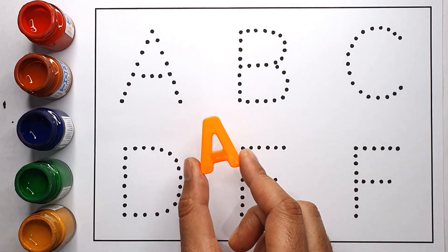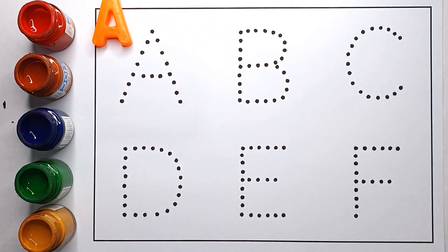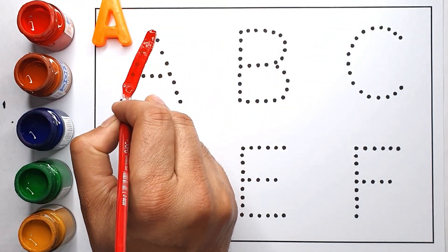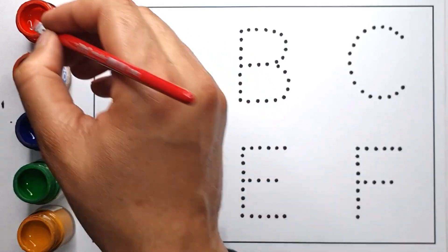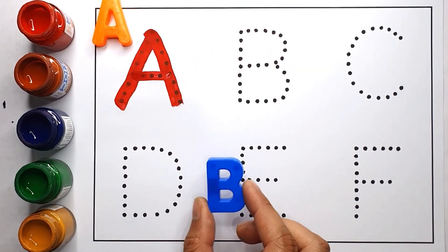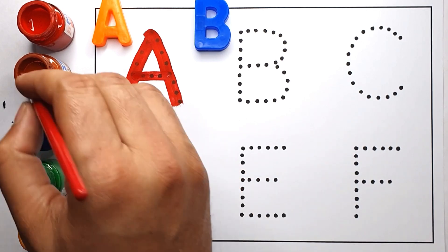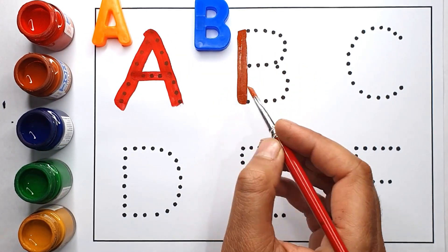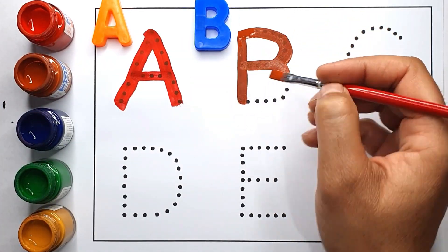Orange color. A, A for apple. Red color. A, A for ant. Blue color. B, B for ball. Brown color. B, B for banana.